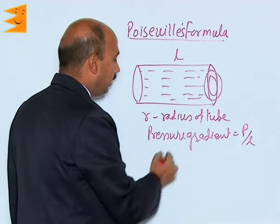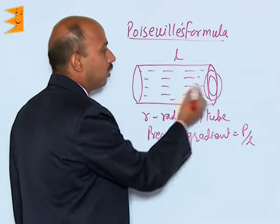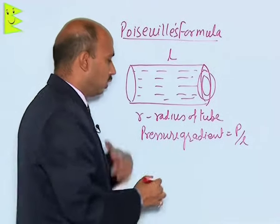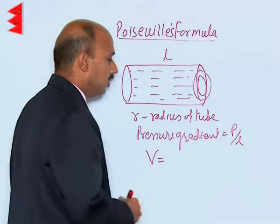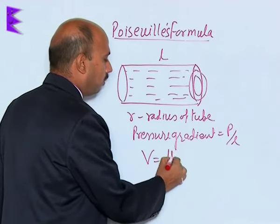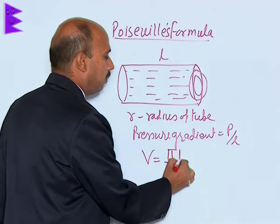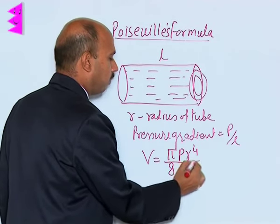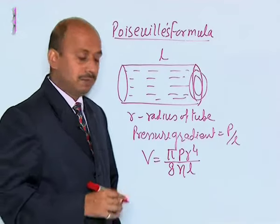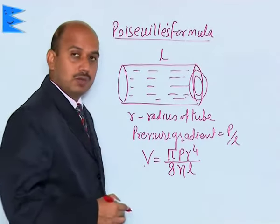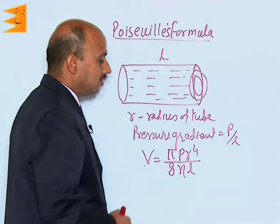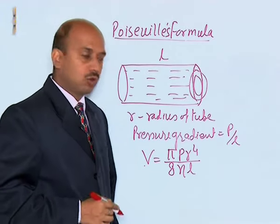Then the rate of flow of liquid — that is, the volume of liquid flowing per second through the tube — is given by V = π/8 × P × r⁴ / (η × L). This means the rate of flow of liquid depends on the pressure gradient, the radius, and the coefficient of viscosity.